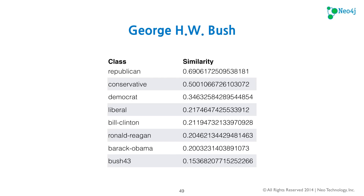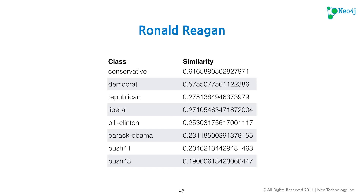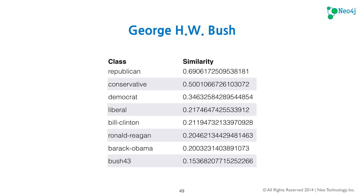For Bush 41, George H.W. Bush, at the top we have the most similar labels: Republican, conservative, and then Democrat. We can see how far Republican is from Democrat. Going back to compare with Ronald Reagan, George H.W. Bush had a slight leaning towards the Democratic Party, which is interesting because during his presidential term he had a war, so he probably wanted to appeal to a bipartisan audience. A quick note: Ronald Reagan was a Democrat before 1962 and a Republican after, but for the purpose of this exercise the information still works and we'll update it for the next round.